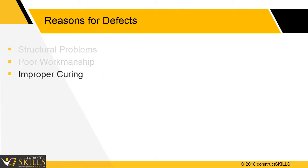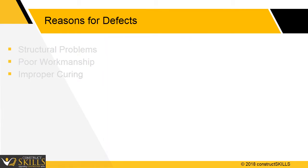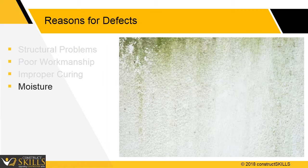Improper curing. Plaster needs to be cooled to reduce shrinkage cracks. Moisture. Plaster is vulnerable to water damage if walls are constantly wet.